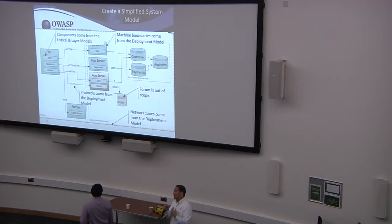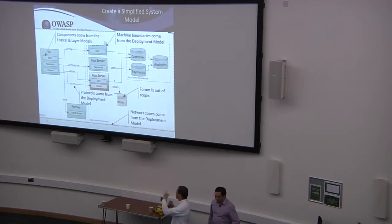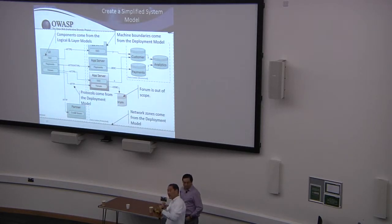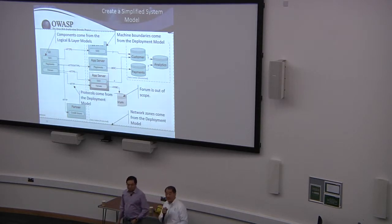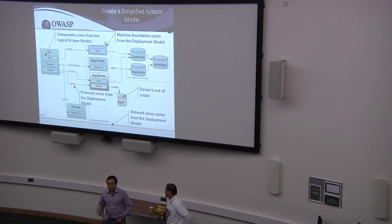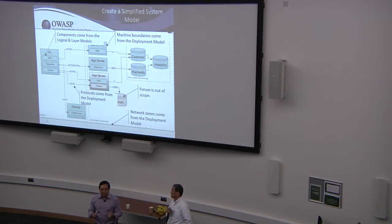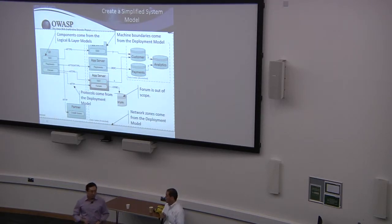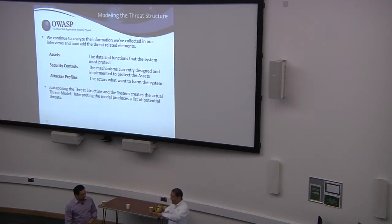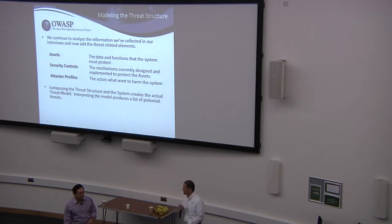One thing we're finding at Cigital about scaling threat modeling is that the system analysis — figuring out how all these things fit together — is the hardest part. It's the key thing you have to teach staff how to do. Even experienced software architects find it a judgment call when extracting information about scope and depth. But the nice thing is we're using diagrams they already know, so we're building a common language between security and development.